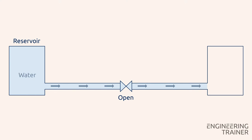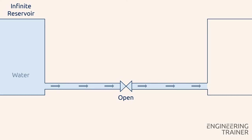To further simplify the model we assume that both reservoirs are infinite in size. This means that the pressure at the inlet of the pipe is constant due to the large size of the full reservoir.